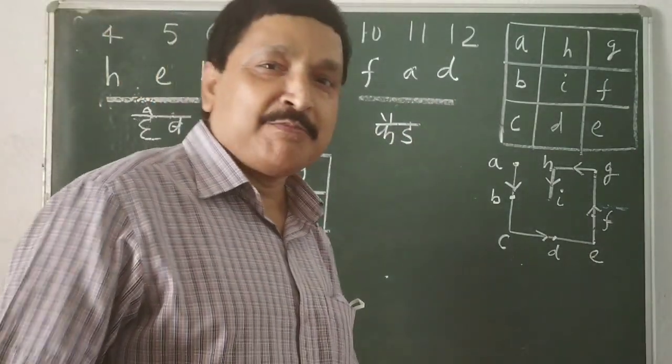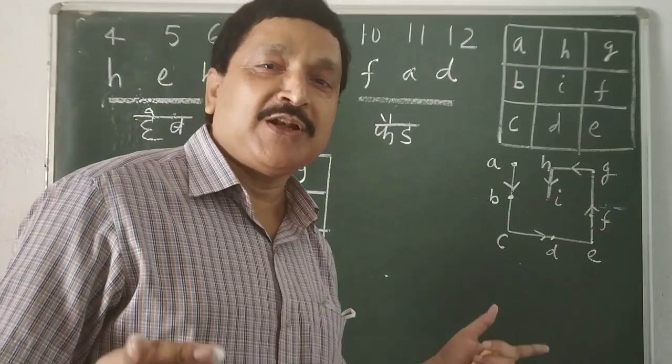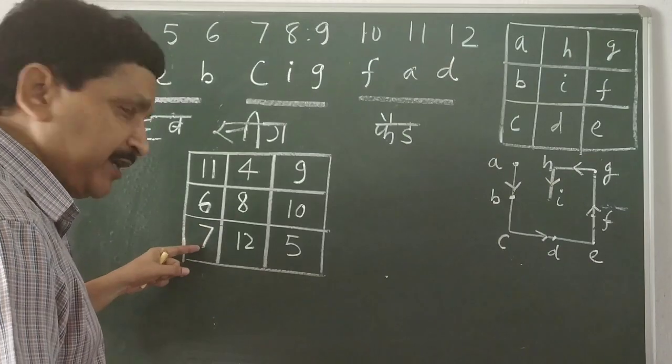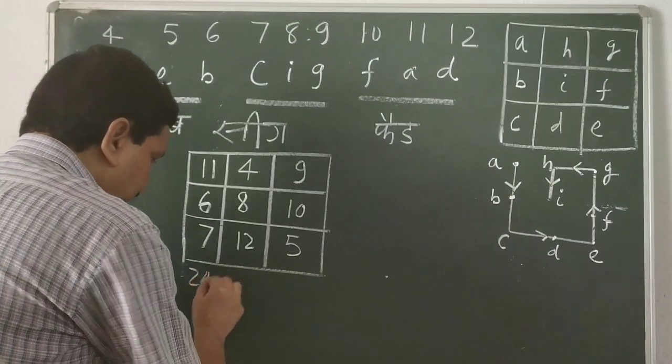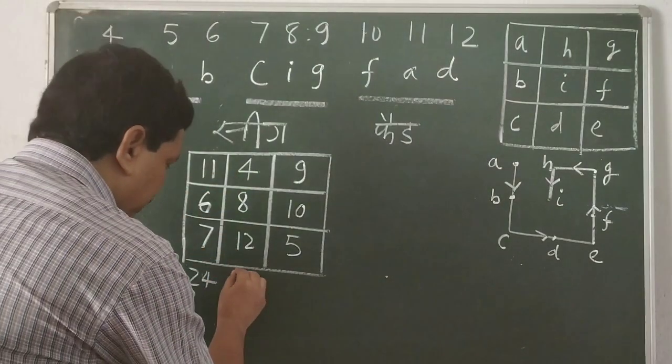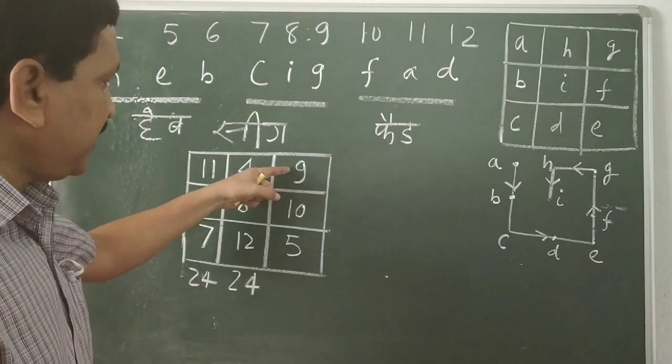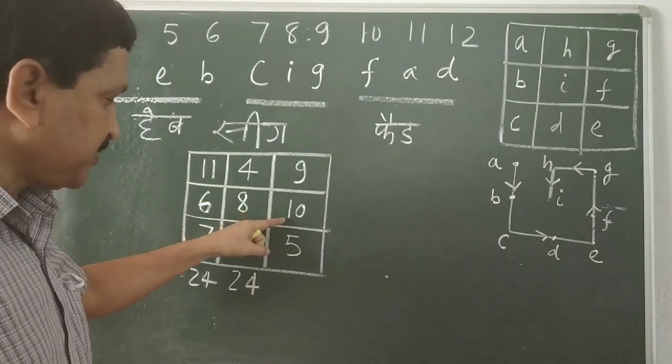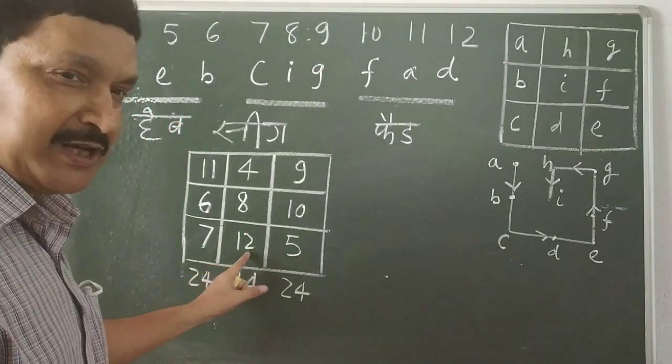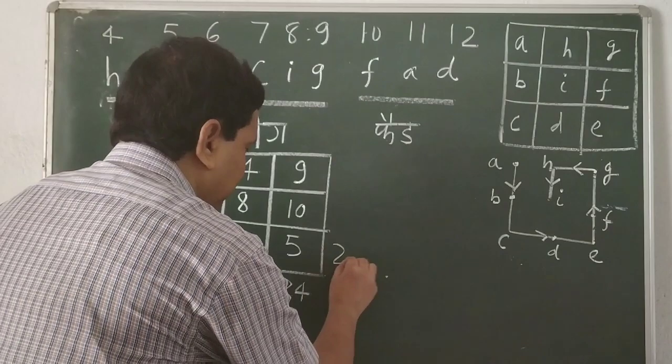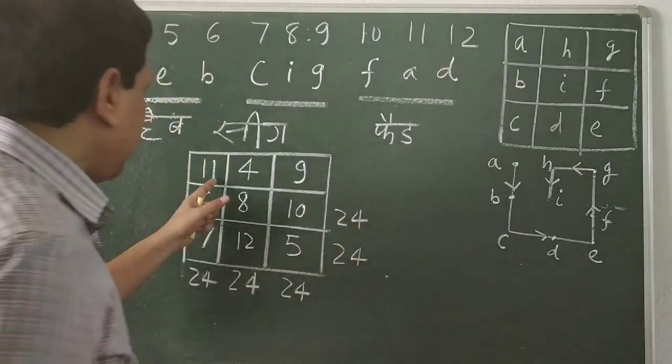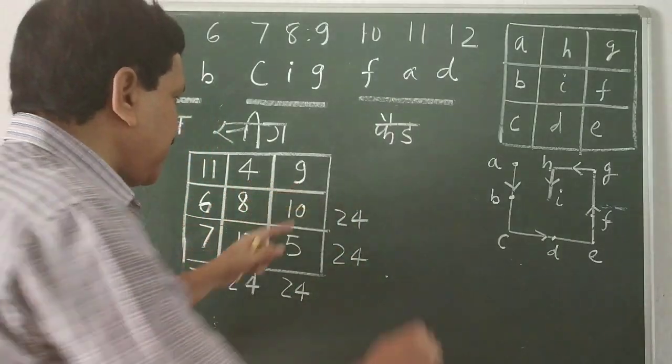Now let us verify by adding whether our goal is fulfilled or not. So let us add 11 and 6. 17. 17 plus 7 is 24. Now see the second column. 4, 8, 12. 24. Same sum. 9 and 10. 19 plus 5. 24. Likewise. 7 plus 12. 19 plus 5. Is again 24. 6 plus 8. 14 plus 10. Is again 24. And 11 plus 4 is 15 plus 9 is again 24.